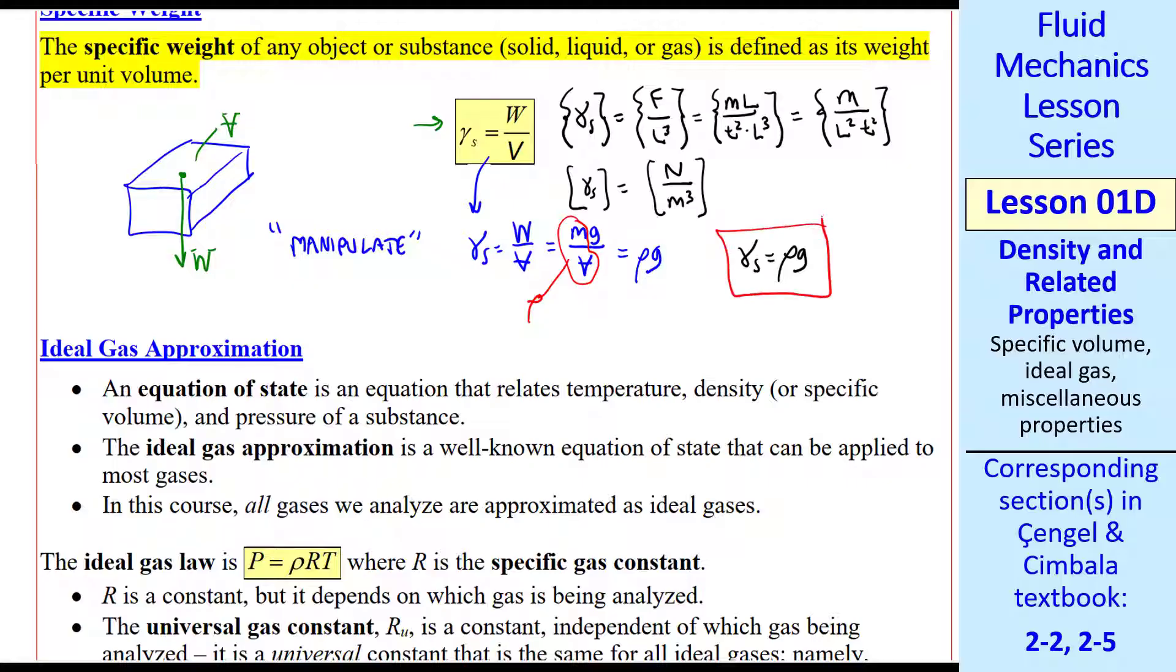So you'll often see this as the definition of specific weight in textbooks, but fundamentally it's just the weight per unit volume. By the way, this is sometimes useful because rho and g often occur together in fluid mechanics problems. Personally, I don't use gamma s very much. I like to just write out rho and g.